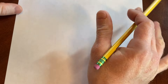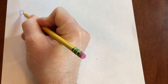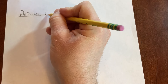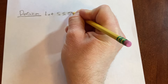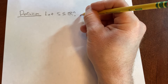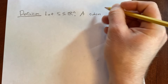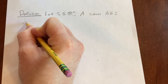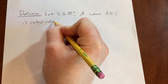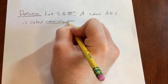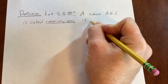In this video we're going to define relatively open and relatively closed. Let S be a subset of R^n. A subset A of S is called relatively open if we can write it like this: